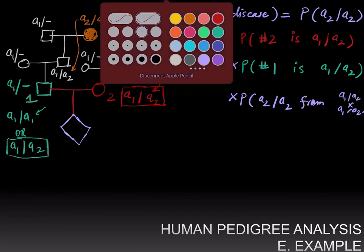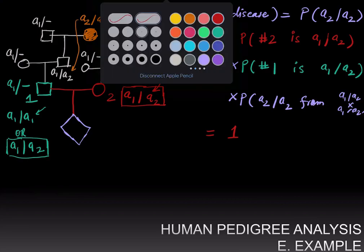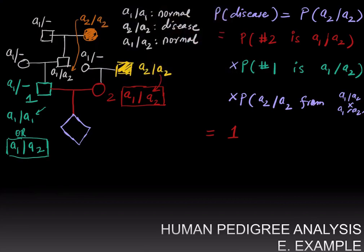Let's compute these probabilities. What is the probability that this child's mother, individual two, is a heterozygote? Well, she is already confirmed to be a heterozygote from our genotype analysis, so the first probability is one. The third probability — that the child is homozygous A2 over A2 given both parents are heterozygotes — is one quarter from a monohybrid cross.